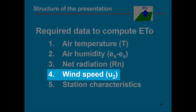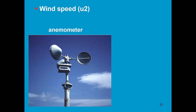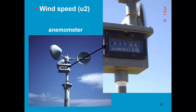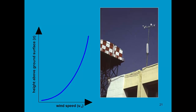Wind speed is the next climatic parameter. Wind speed is measured with an anemometer, which actually measures the wind run — counting how many meters of wind have passed. Expressed as a function of time, you get wind speed. Wind speed varies with the height at which it is measured; at the top of a building it is much larger than close to the Earth's surface. The Penman-Monteith method requires wind speed measured at a reference height of 2 meters. Anemometers are often placed at 10 meters, but a logarithmic function can convert wind speed from another height to the equivalent at 2 meters.